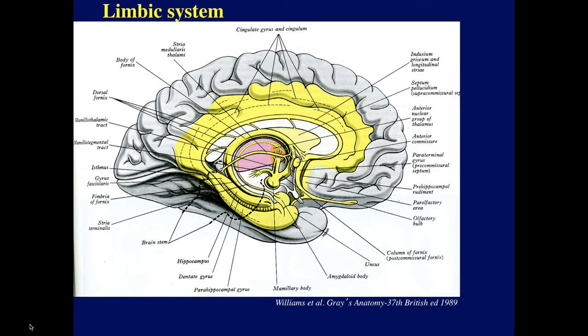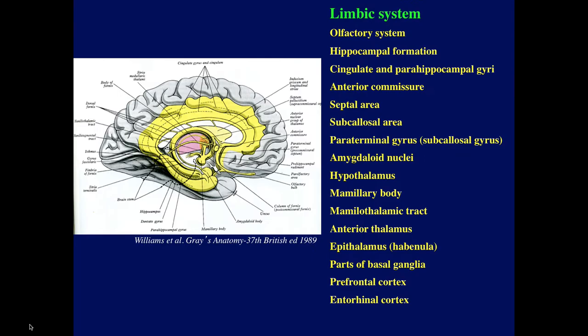This beautiful diagram from the British Gray's anatomy shows almost the entire limbic system outlined in yellow, and the complexity of it appears overwhelming. I made a list of all the structures involved in the limbic system — there's a huge number of these structures. So how did it get to be so complicated?